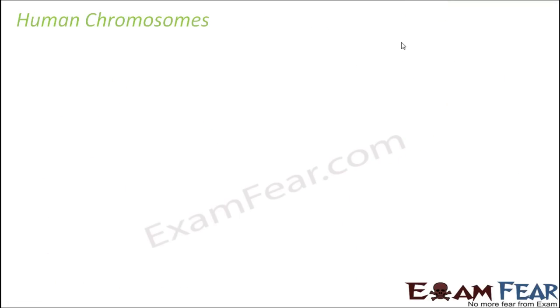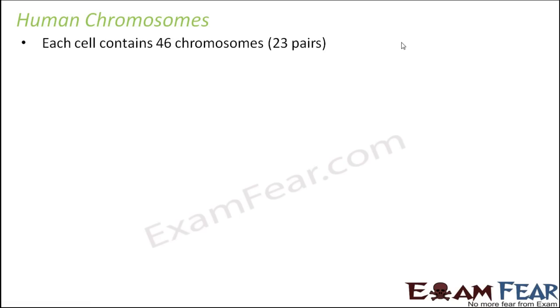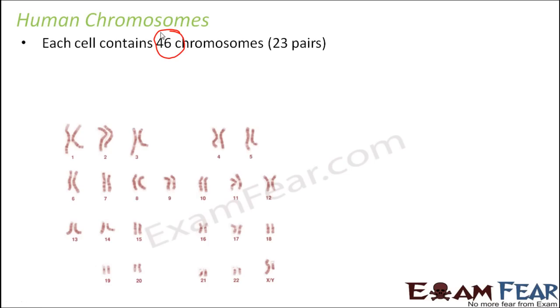This is something interesting. In order to understand this, you should have some basic knowledge of human chromosomes. You have this knowledge because we have discussed it in class 10, but still, just for a quick recap, let us talk about human chromosomes. Inside the human body, each and every cell contains 46 chromosomes, so they are all diploid cells. All the cells of the body are diploid cells — that is, they have 46 chromosomes, or you can say they have 23 pairs of chromosomes.